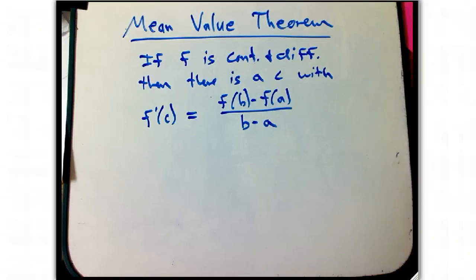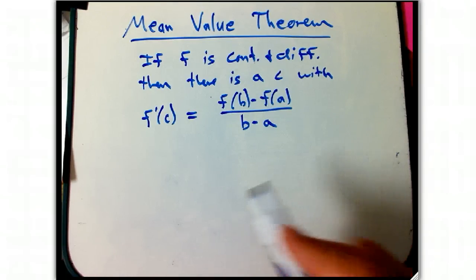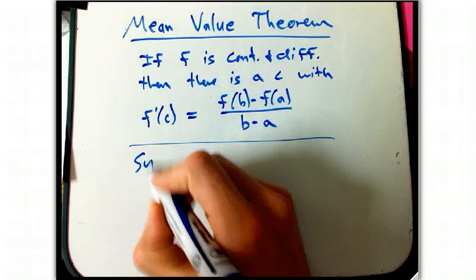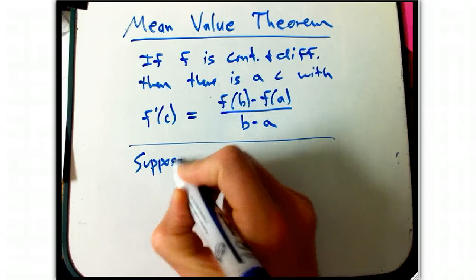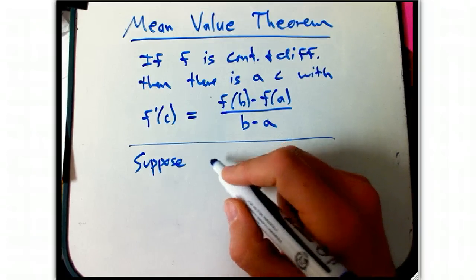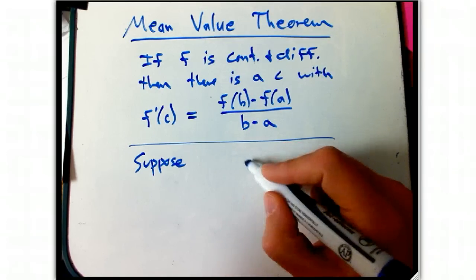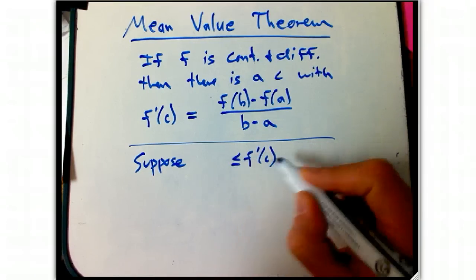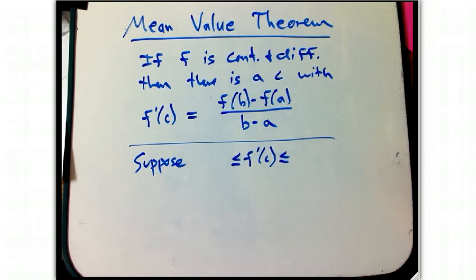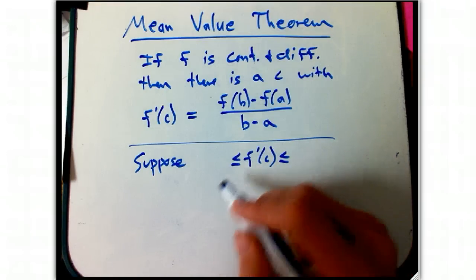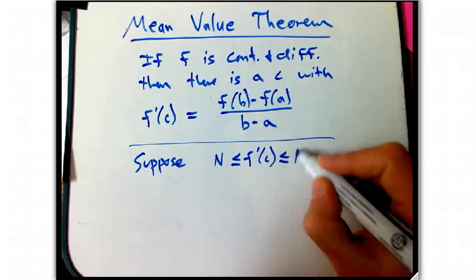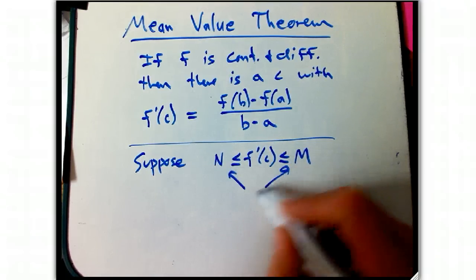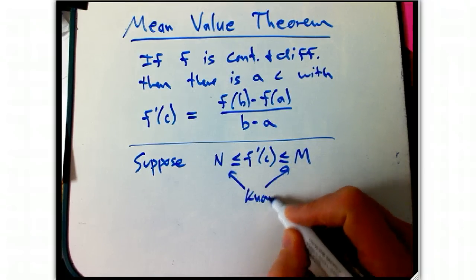So this is not the form in which it's most useful. So let me give you a corollary here. Suppose that we know that f prime of c, the slope, is known, it's not known precisely. If it was known precisely to always be the same number, then it would be a straight line. What if it's known to be within some bounds, like between n and m? And these are just some known numbers.